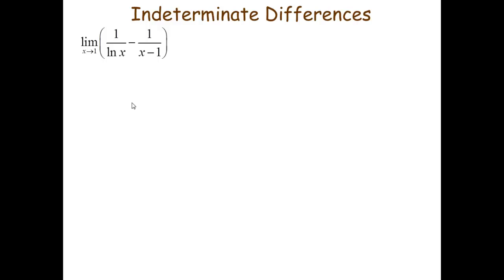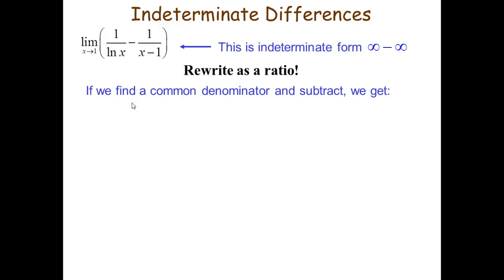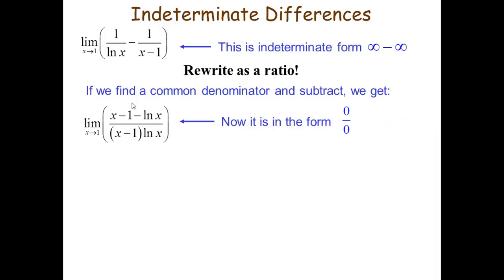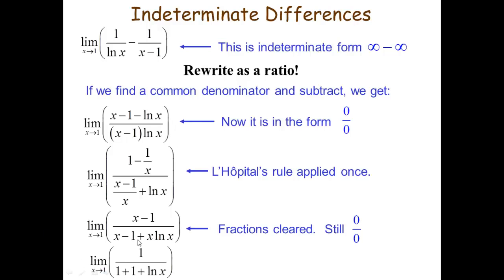Similarly, now indeterminate differences — that is infinity minus infinity. This is also an indeterminate form but L'Hôpital's rule cannot be applied directly. We need to convert it to a form that gives 0 by 0 or infinity by infinity. By taking LCM and a common denominator and subtracting, we get limit x tends to 1 of (x - 1 - ln x)/((x - 1)·ln x). Now it is of the form 0 by 0, so we can apply L'Hôpital's rule. It is applied once and again a common denominator is taken — the fraction is cleared but still it is 0 by 0. So we differentiate again and the answer is 1/2.